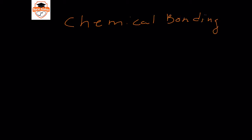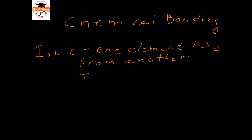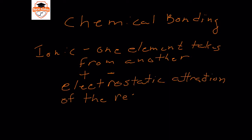In this video we are going to discuss chemical bonding. Chemical bonding is the way that atoms come together to form compounds and molecules. There are two types of chemical bonding. The first type is ionic bonding. Ionic bonds are when one element takes electrons from another, so that you end up with a cation and an anion, and the bond is formed from the electrostatic attraction of the resultant ions.